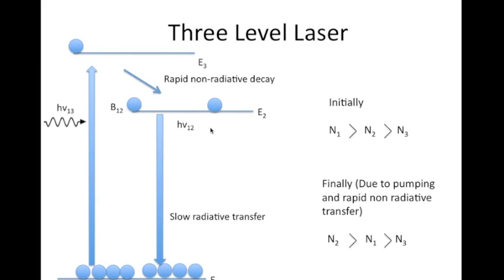So we can achieve lasing action using a three-level medium. However, this process is not very efficient because in order to keep the ratio N2/N1 very high we need to pump atoms from E1 to E3 very rapidly. A more efficient lasing medium usually uses four energy levels. A good example of a four-level system is the helium-neon laser.